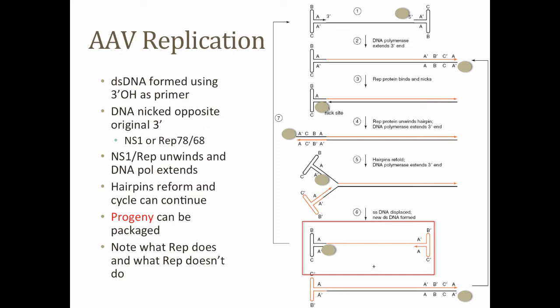It's important to notice what the rep protein does and doesn't do. The name implies it mediates or performs replication, but in fact all it really does is some nicking and potentially some unwinding of DNA. It's the cellular DNA polymerases that actually polymerize and make new virus genomes. Also worth noting: when you replicate these terminal hairpins, each time you do so you get an inversion of these sequences. If you draw out replication by hand and write out the sequences, you'll be able to see why that happens as a function of complementarity.